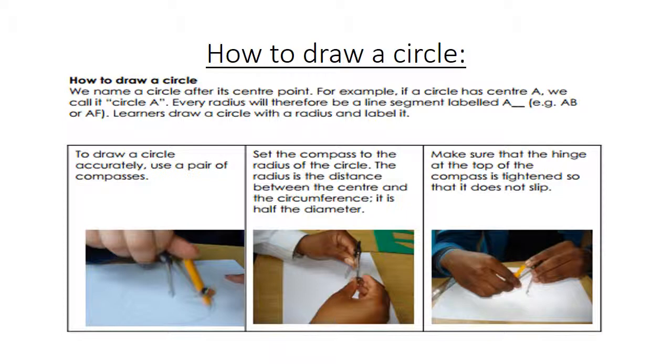To draw a circle accurately, we use a pair of compass. Set the compass to the radius of the circle. The radius is the distance between the center and the circumference. It is half the diameter. Make sure that the hinge at the top of your compass is tightened so it doesn't slip.